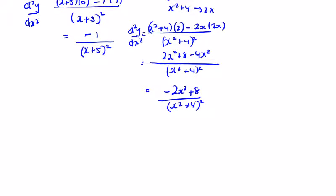Now we can take — we have x squared plus 4 on the bottom. Can I factor the top to be x squared plus 4? We've got a minus 2 outside — but we'd get minus 2x squared minus 8, so no, I can't go any further here. So this is my answer.